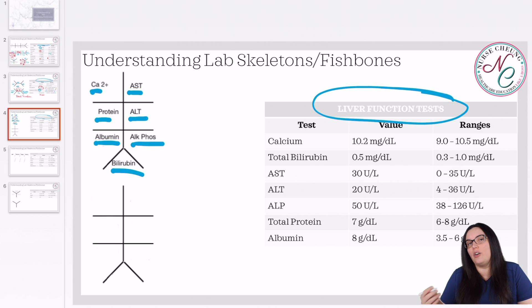So again, we begin by looking at our normals and abnormals, normals being blue, abnormals being red. So our calcium looks good. It's 10.2. So we're going to go ahead and write that in. Our bilirubin looks good. It is 0.5. I'm happy with that. Our AST is 30. That looks good. Our ALT is 20. That looks good. Our ALK-fos is 50. Again, still looks good. Our total protein is seven. Good with that.